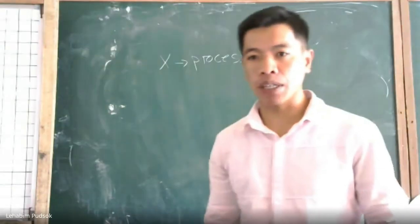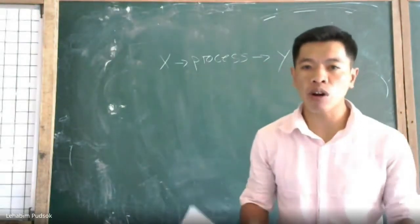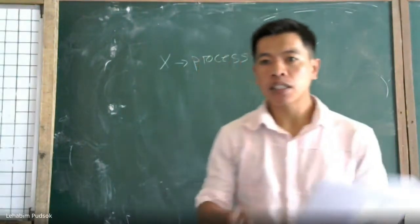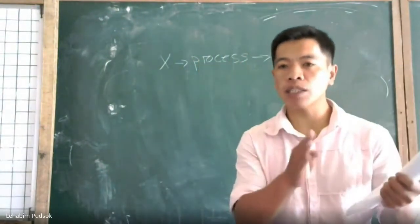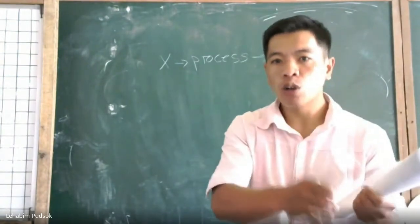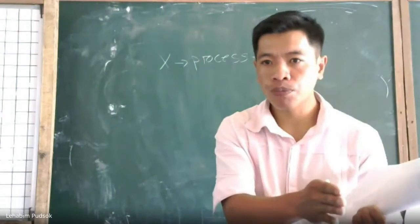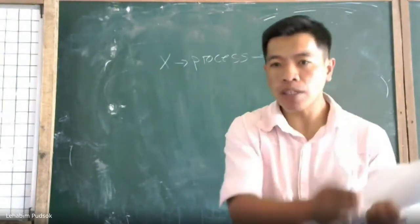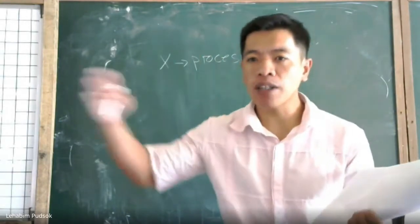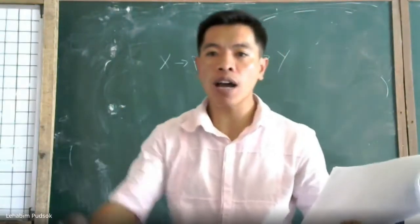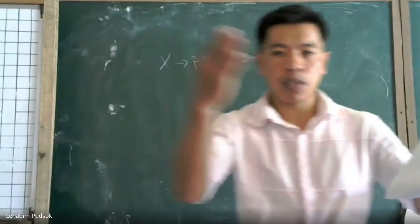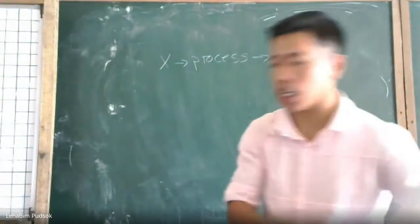The independent variable is the variable that you are changing or manipulating. Because of the independent variable, the dependent variable also has a value. The dependent variable is dependent on the independent variable.